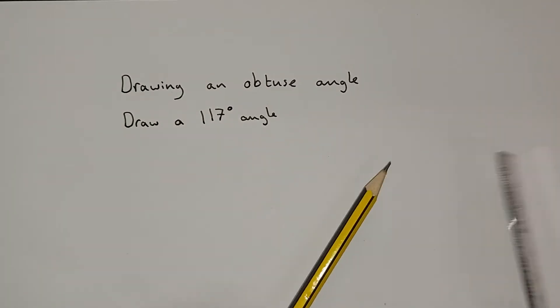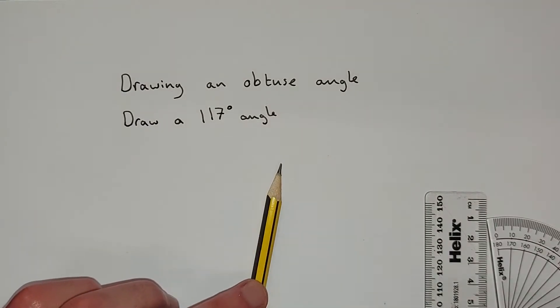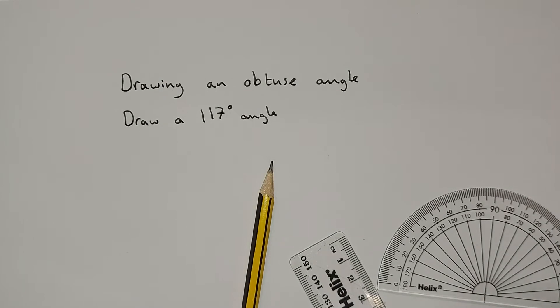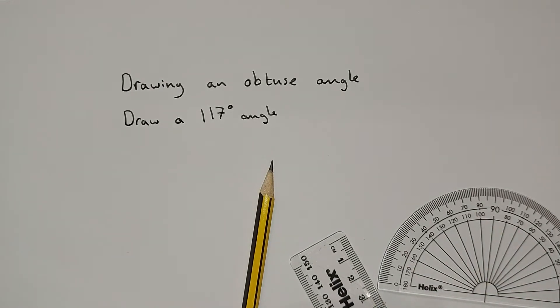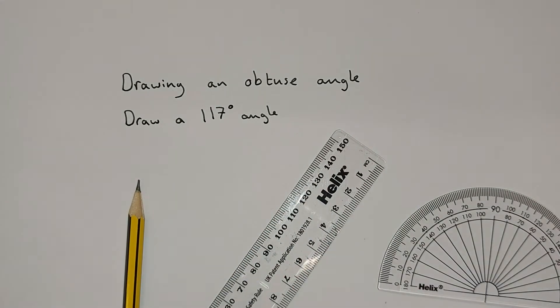Again, if you're drawing any kind of construction with angles, make sure you've got a nice sharp pencil and a protractor where you can see all the points and it is clear with all the numbers, and a ruler where you can see all the numbers and all the little marks are clear as well.